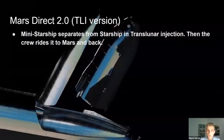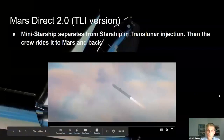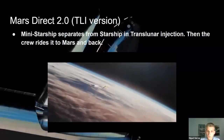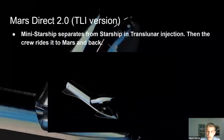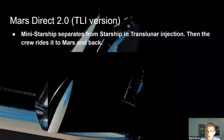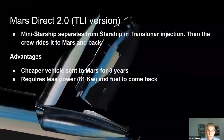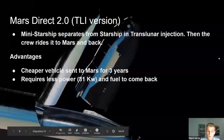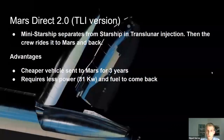Mars Direct 2.0, in the trans-lunar injection version, is basically the same as SpaceX's plan except there's a new vehicle — a mini Starship — that separates from Starship at trans-lunar injection, and that's the ship that completes the trip to and back from Mars. That's where the crew is. The main advantage is it's a cheaper vehicle sent to Mars, and it requires less power and fuel to come back.